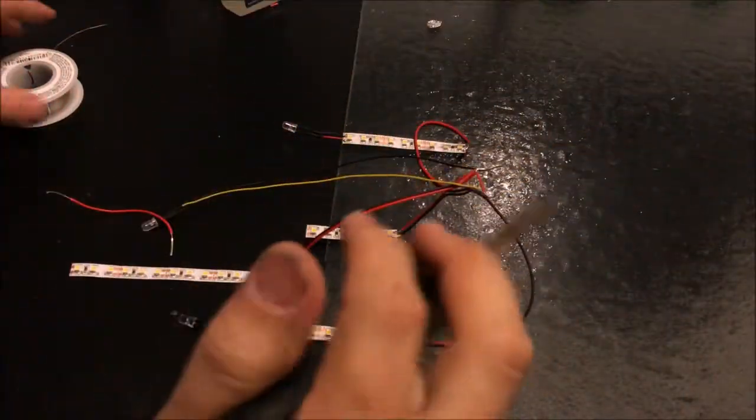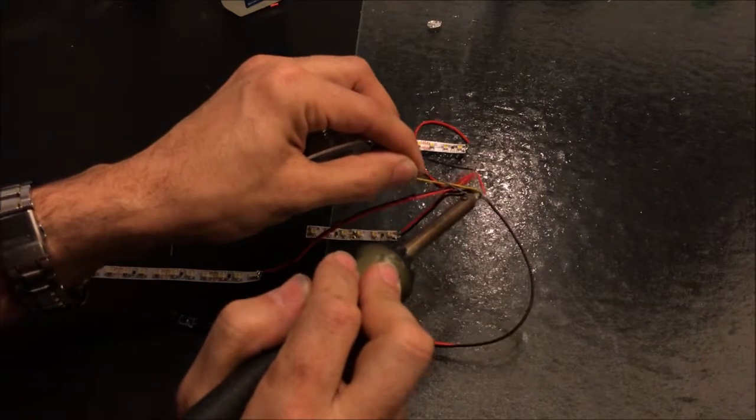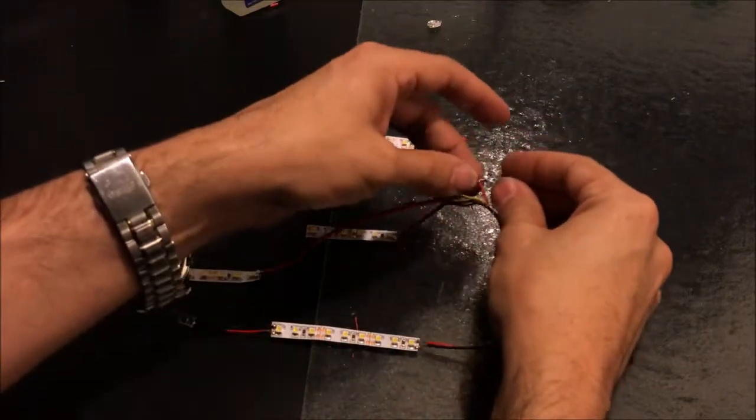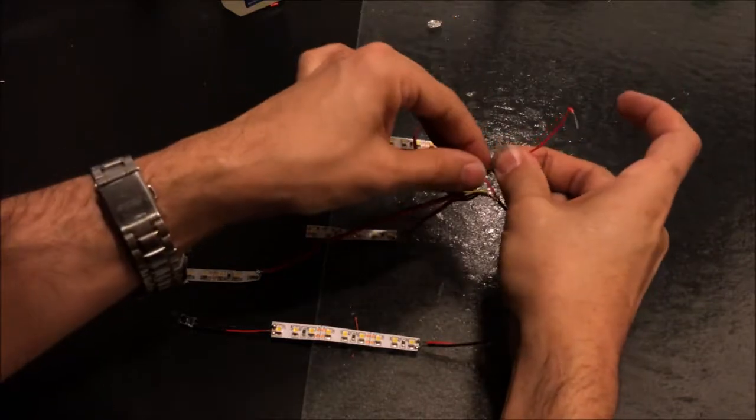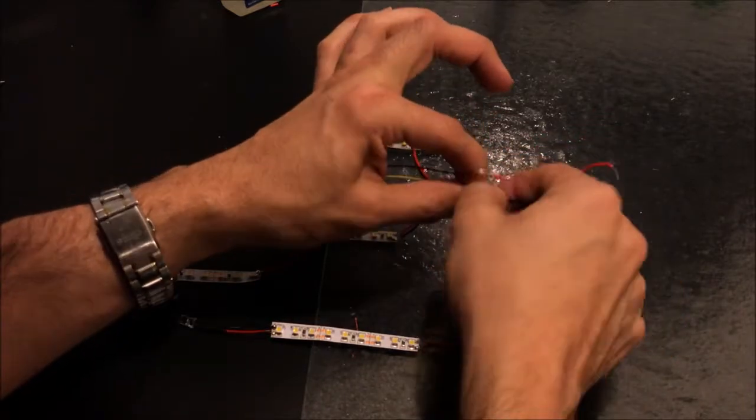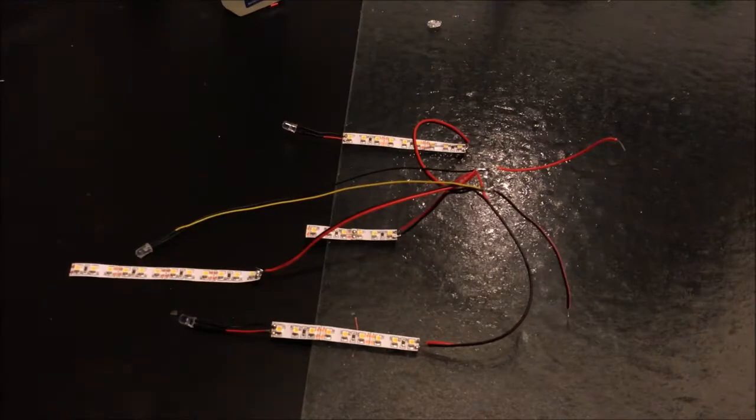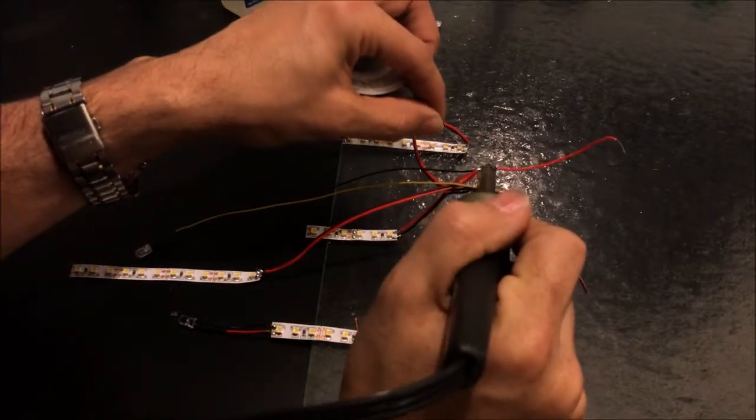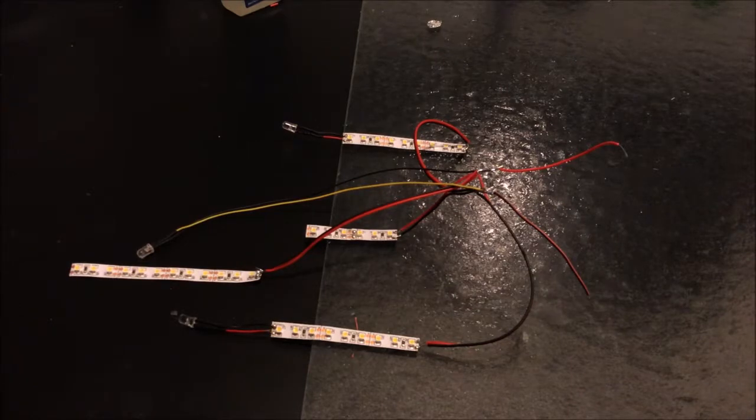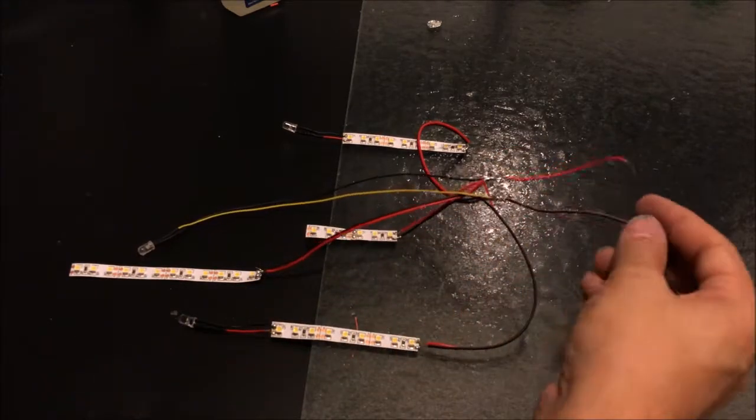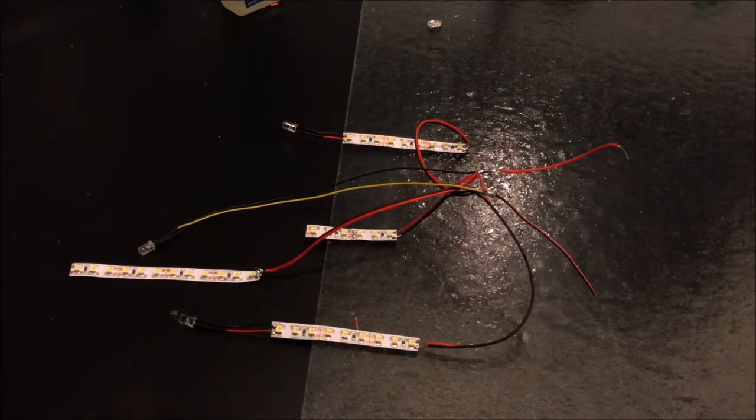We're going to run it to a new wire, and this is all of our negative leads run into one place. Once again, just a demo so it is a little messier than it will be in real life. But this is what's going on in my 1701E: LED strips, a couple pre-wired LEDs, all soldered to one power cord. What we're going to do next is quickly shrink wrap those just to cover up that connection.